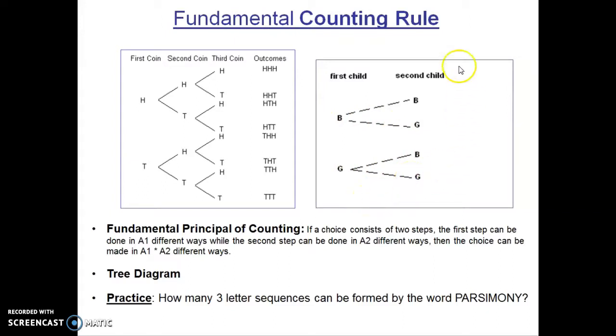The diagram here is called a tree diagram. It gives us a visual aid of the choices and the total outcomes. The concept applies to more than just two choices. For example, here we flip a coin three times. If we want to know how many outcomes, we use the same process. On the first flip, there's two possible outcomes. On the second flip, there's two possible outcomes. And on the third flip, there's two possible outcomes. So two times two times two is eight. So there are eight total outcomes that can occur by flipping a coin three times.